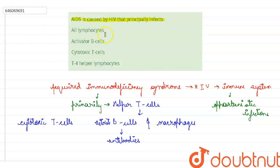If you look at the correct option for this question, the first says all lymphocytes, which is wrong. It does not affect all lymphocytes. It will only affect the T lymphocytes. So this is wrong. Second says activator B cell, that is also wrong.